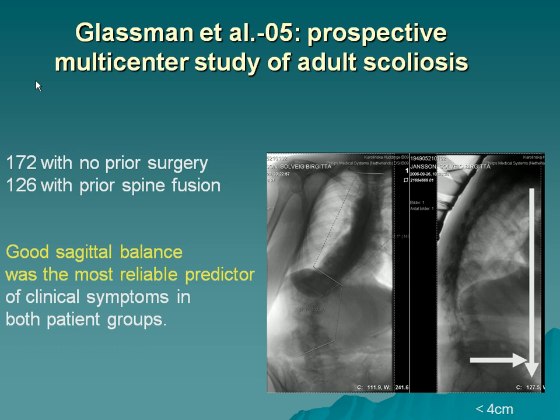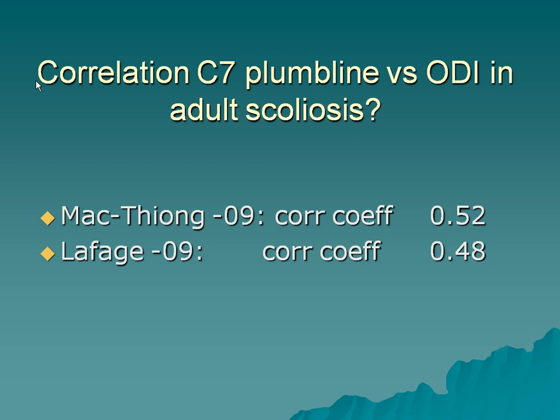The Glassman study, an American study, showed the importance of sagittal balance — it's well known. And what about the C7 plumb line and Oswestry scores — are they correlated? Yes, they're correlated, but not that strongly: 0.52 in one US study and 0.48 in another. I'll explain shortly why the correlation isn't stronger.